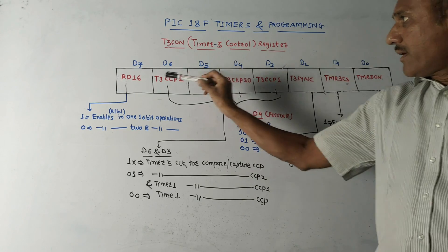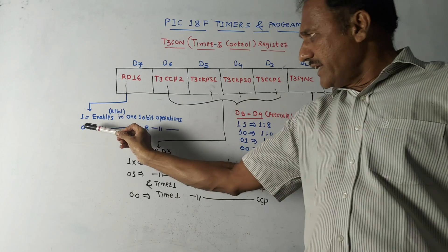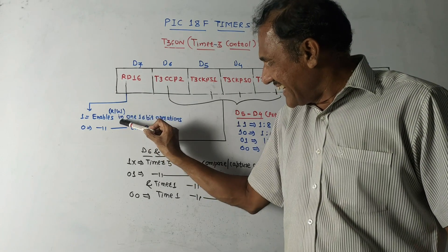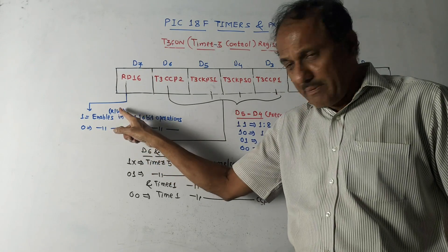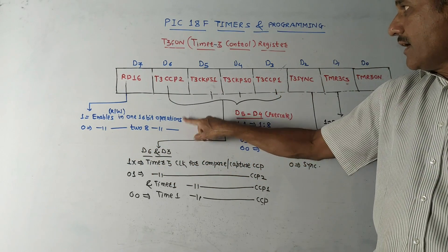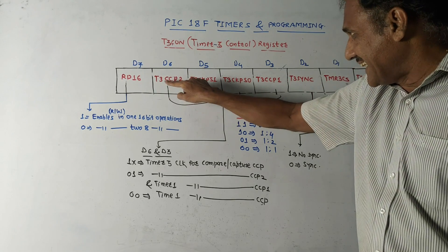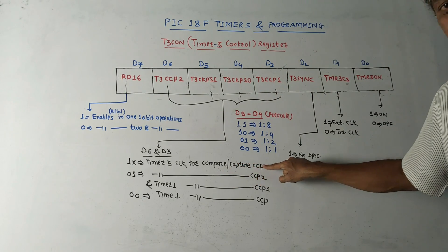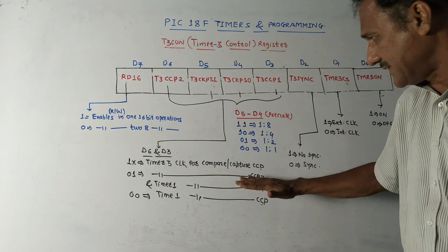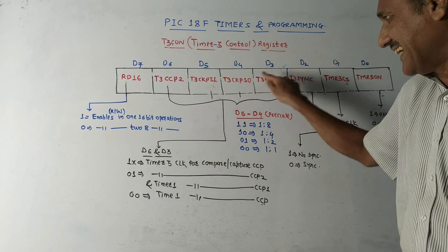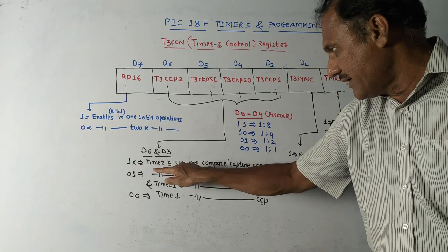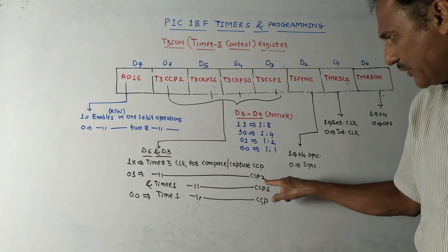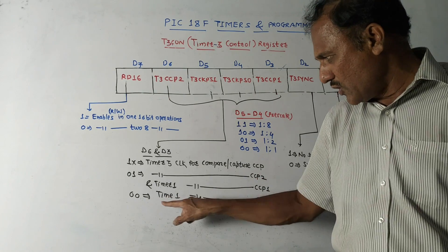The last type is the Timer 3 control register. MSB bit d7 is RW16: when it is 1, it enables read/write in one 16-bit operation; when it is 0, it enables read/write in two 8-bit operations. Among the next four bits, d6 T3CCP2 and d3 T3CCP1 are related to the Compare and Capture CCP module. If this combination d6 and d3 is 1 0 or 1 1, Timer 3 clock is used for both CCP modules. If 0 1, Timer 3 is used for CCP2 and Timer 1 for CCP1. If 0 0, Timer 1 is used for both CCP modules.